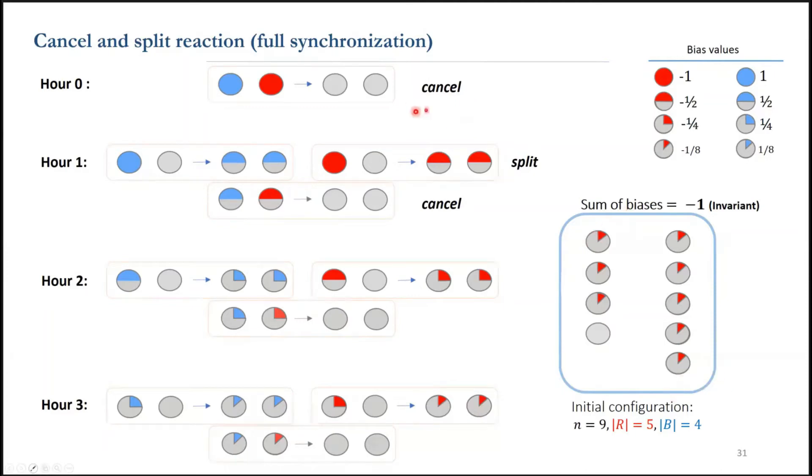is creating enough of these neutral agents to help the splits, so that all the remaining agents can do a split in the next hour. If this happens, if all the remaining opinionated agents can split, then each successful hour of cancel and split will double the difference between the number of majority and minority agents.